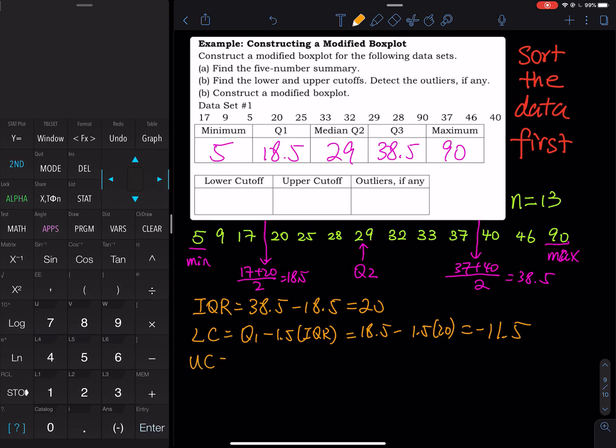And then the upper cutoff, we have Q3 plus 1.5 times IQR. So that is Q3, 38.5 plus 1.5 times 20. So we have 38.5 plus 1.5 times 20, so that is equals to 68.5. Do we have any data greater than that? Yes, we do. We have a 90. We have a 90 greater than 68.5. So the 90 is an outlier. But 90 was a maximum. Then what is the maximum now? The maximum is the second highest value. So the 46 is now the maximum. Don't go back to change the table. Just make a note right there and then you will be okay.